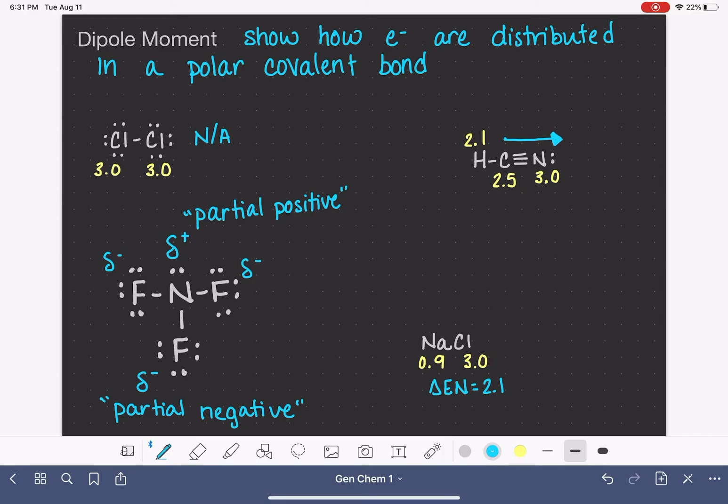The way that I like to remember the direction that the arrow goes is I like to make a plus sign next to the positive-ish element and then draw the arrow towards the negative one. When I say positive, I'm referring to this partial positive, partial negative notation. Make a plus sign on the partial positive element and then draw your arrow towards the negative.